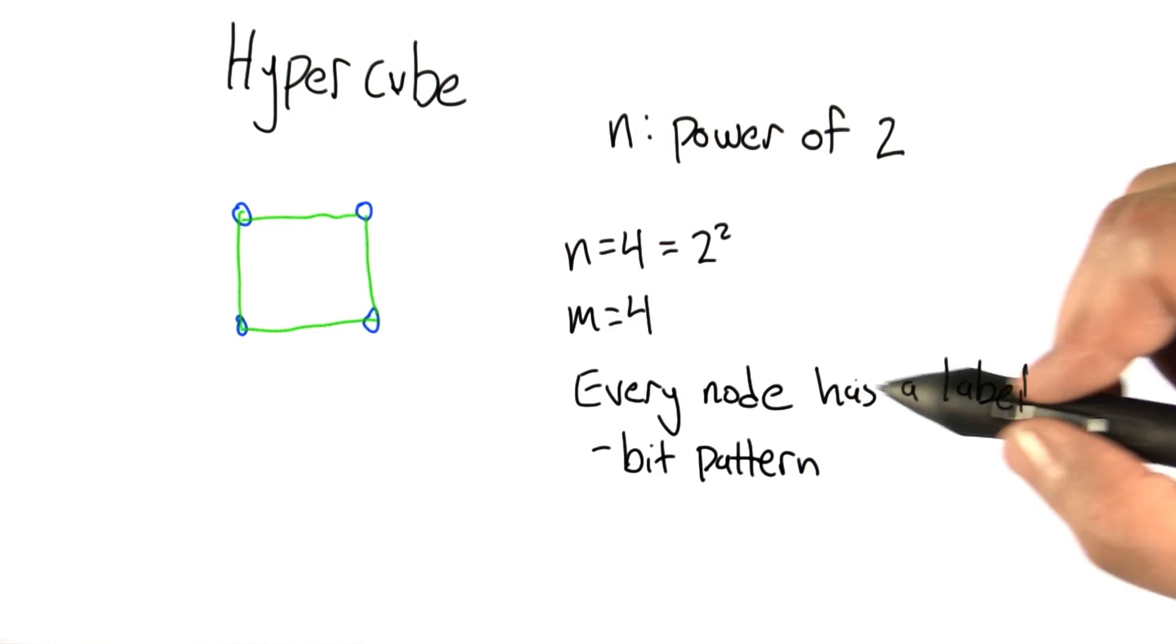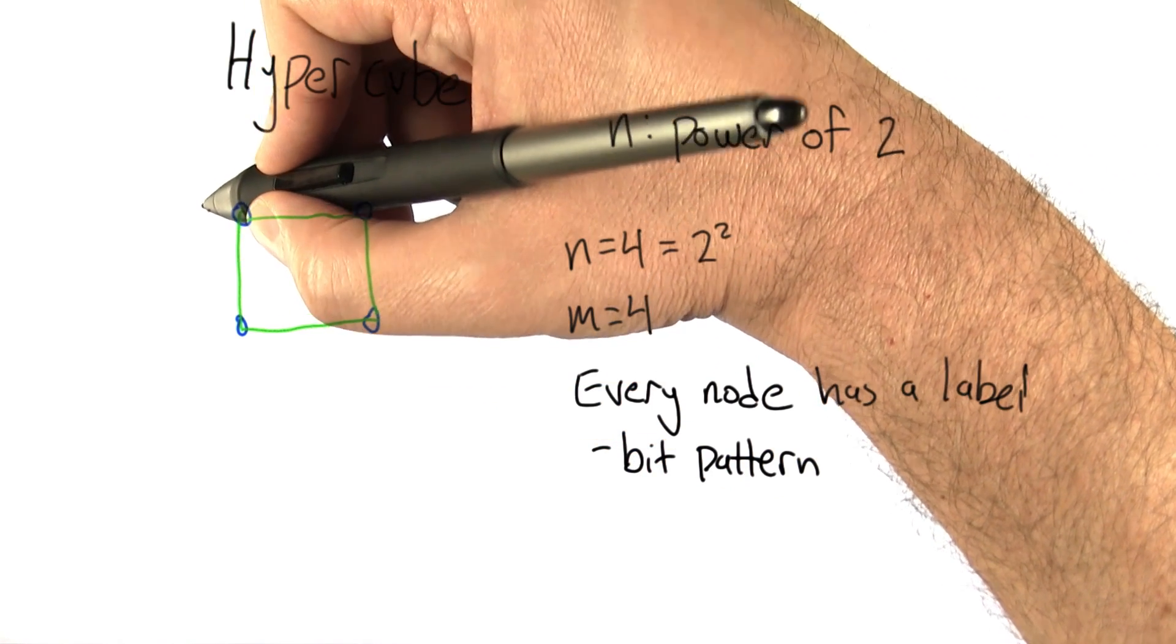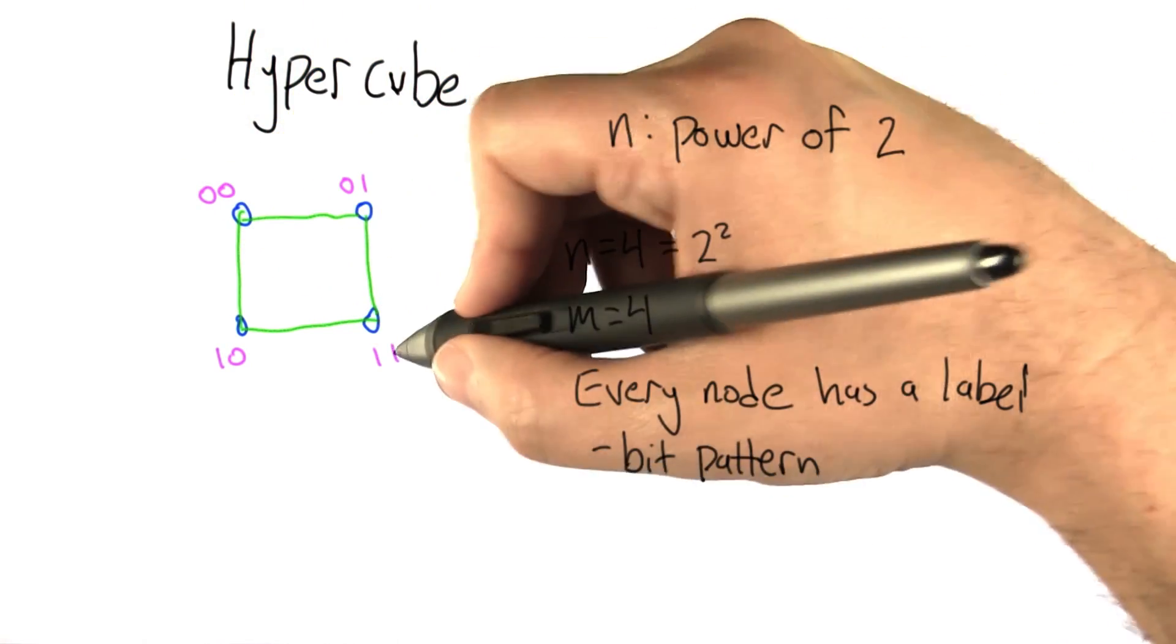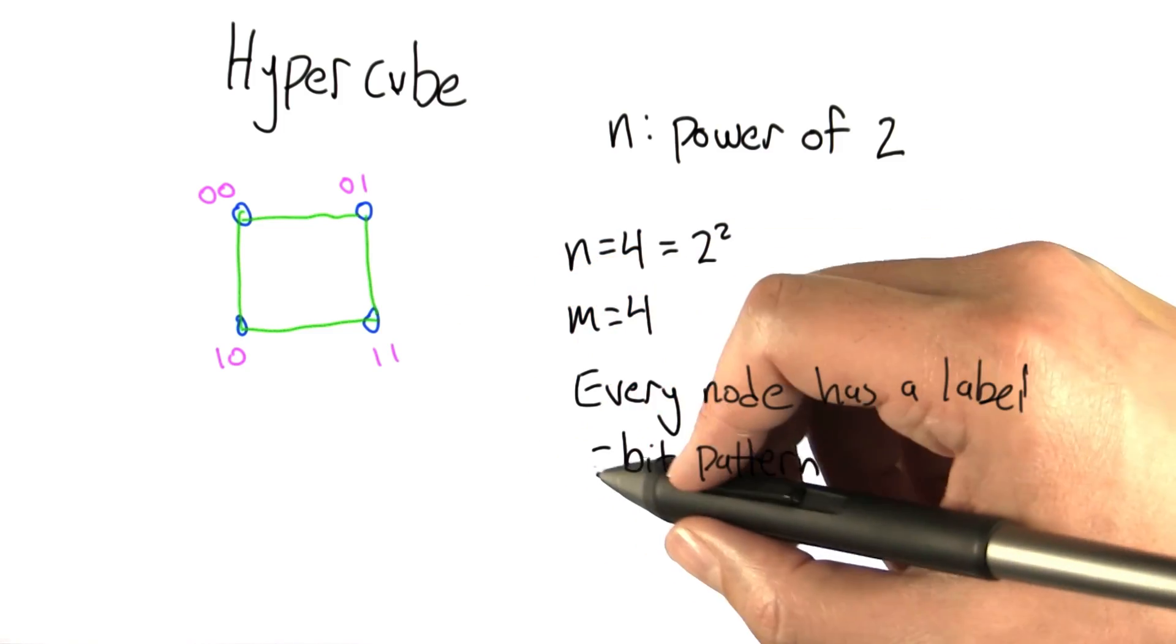We're going to imagine that every node has a label, and that label is a bit pattern. In particular, we're going to number each of the nodes from 0 up to n-1, and we're going to connect two nodes if their bit patterns differ in exactly one place.